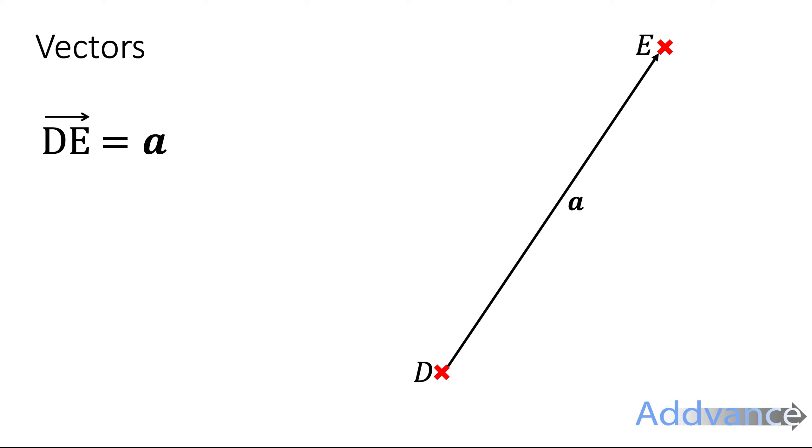And then we can also give it a name, we can call it vector a and we do put that in bold because it's a vector. We write vectors in bold or sometimes we underline them. We can also say that it goes across three and up four and so you can write it as a column vector like this, three across four up.